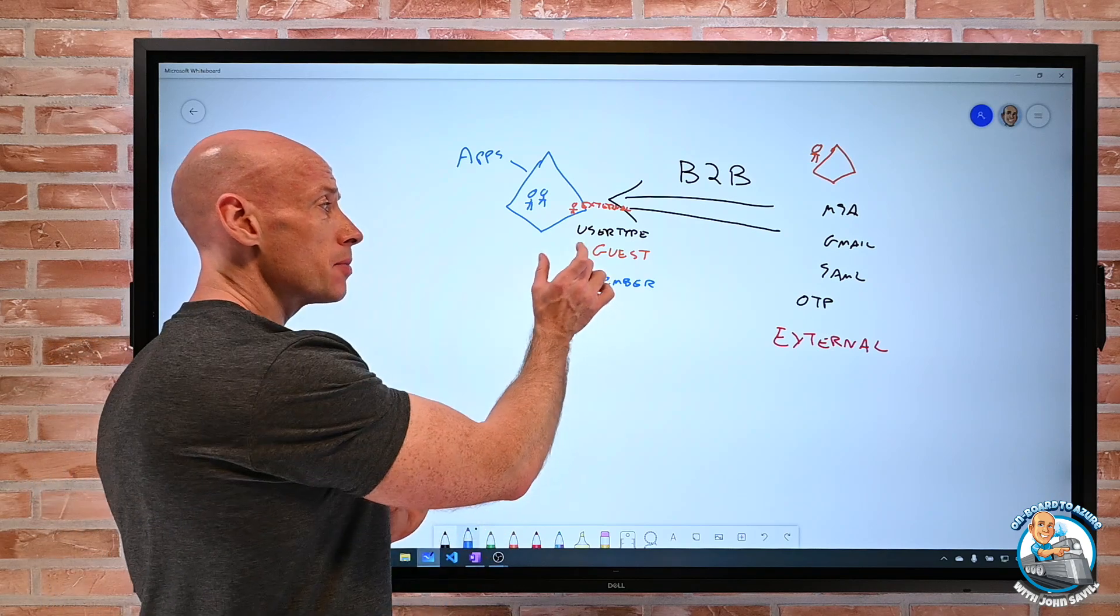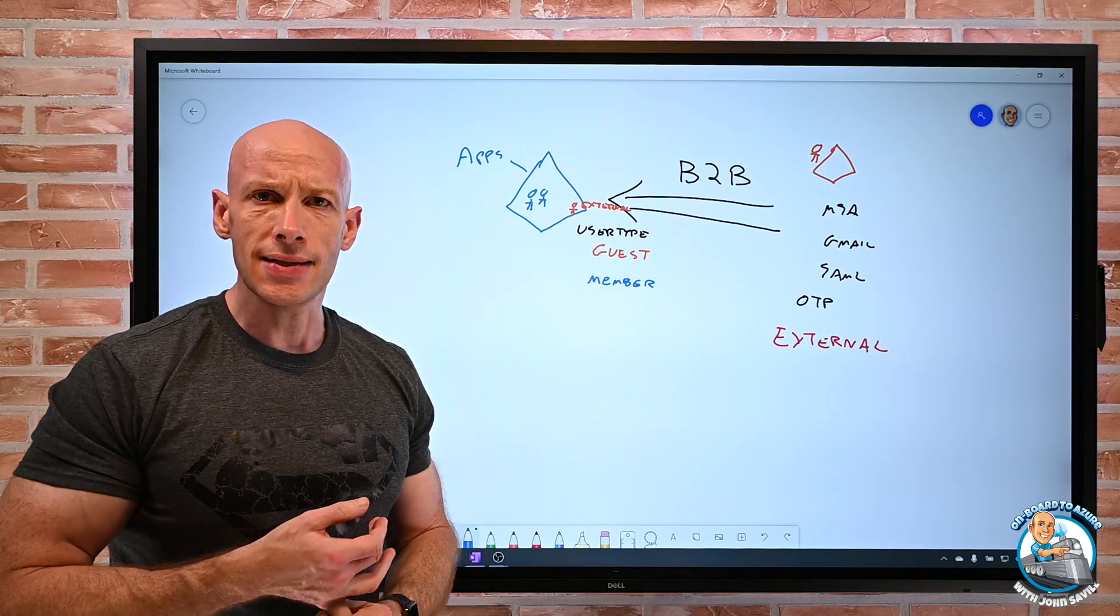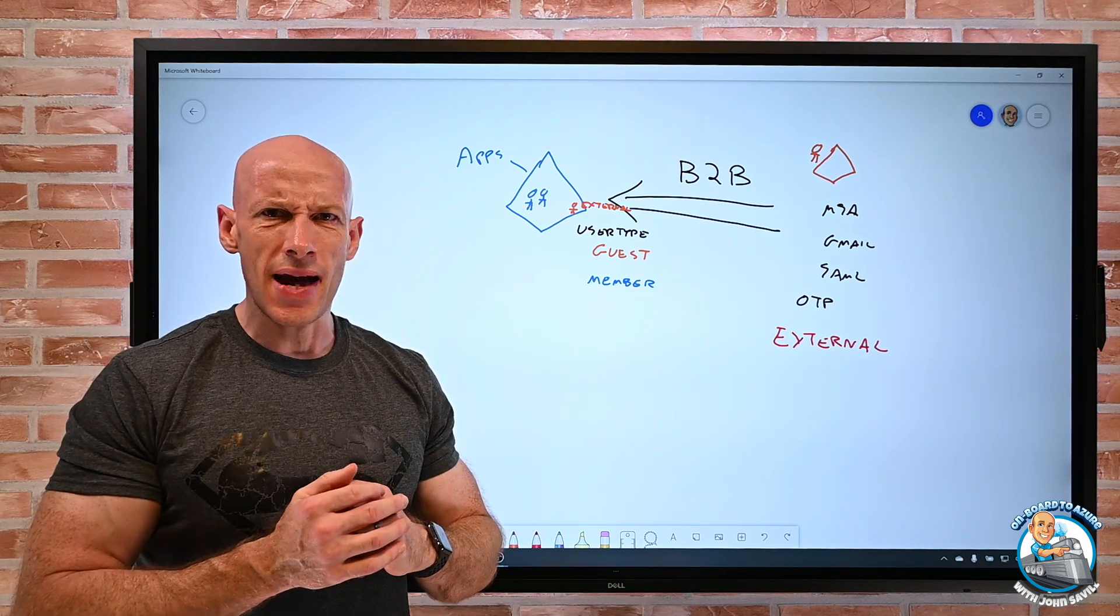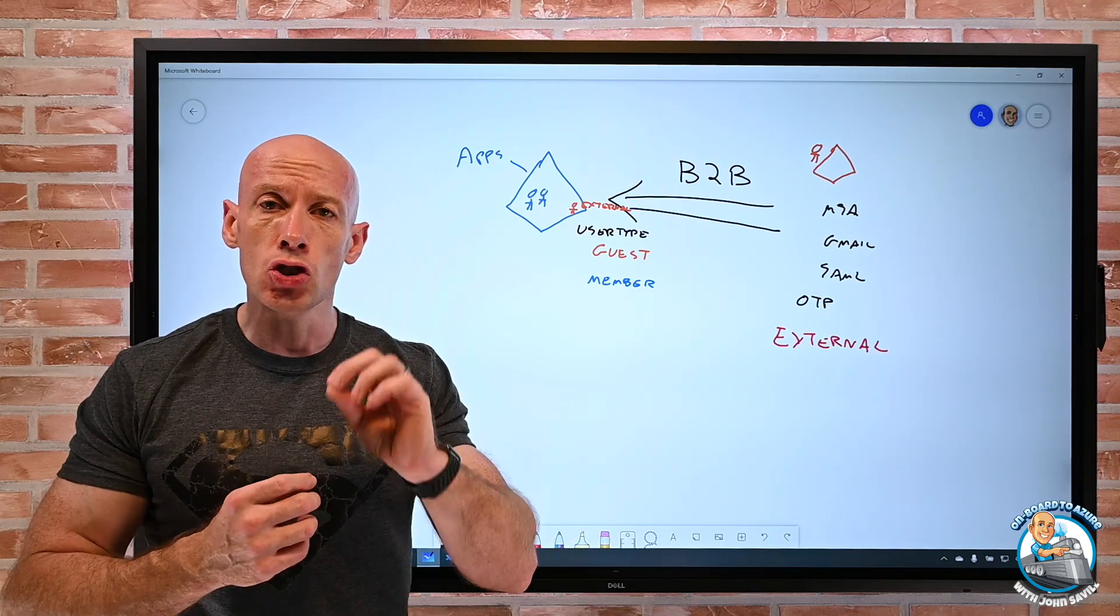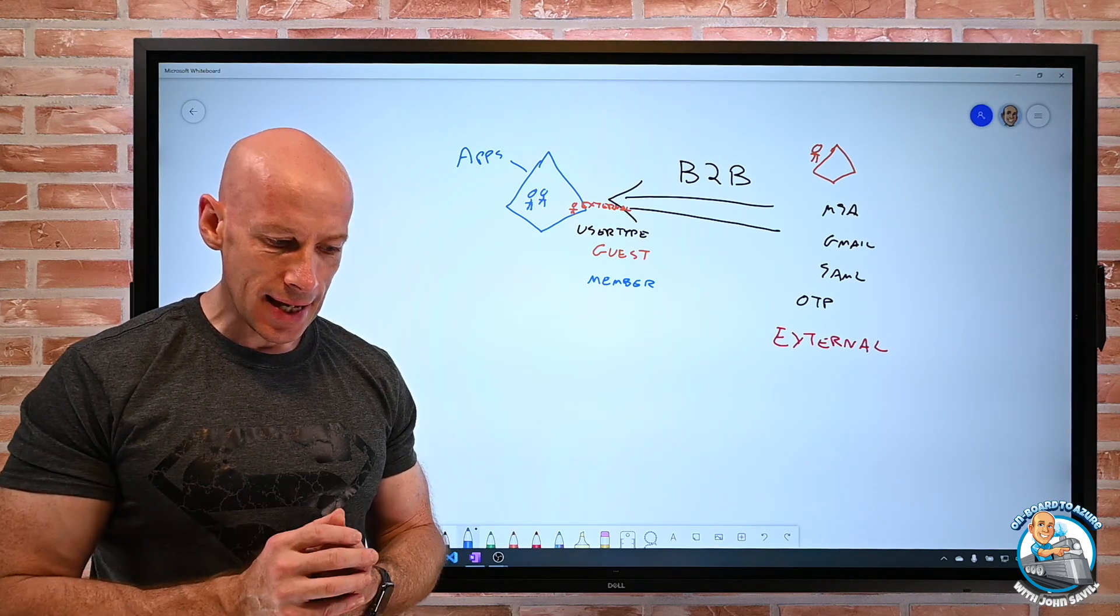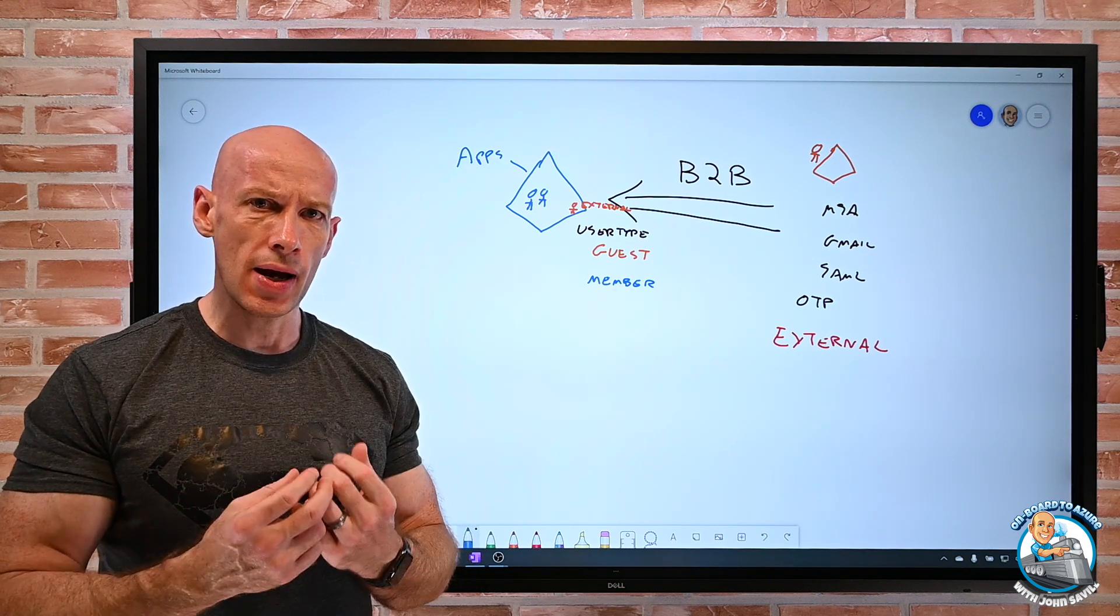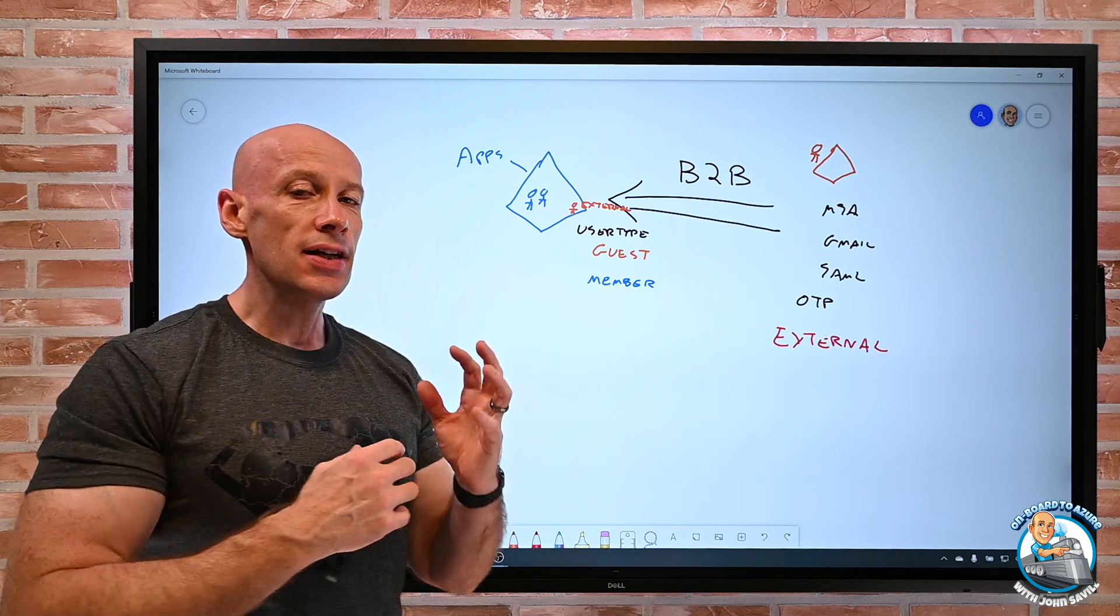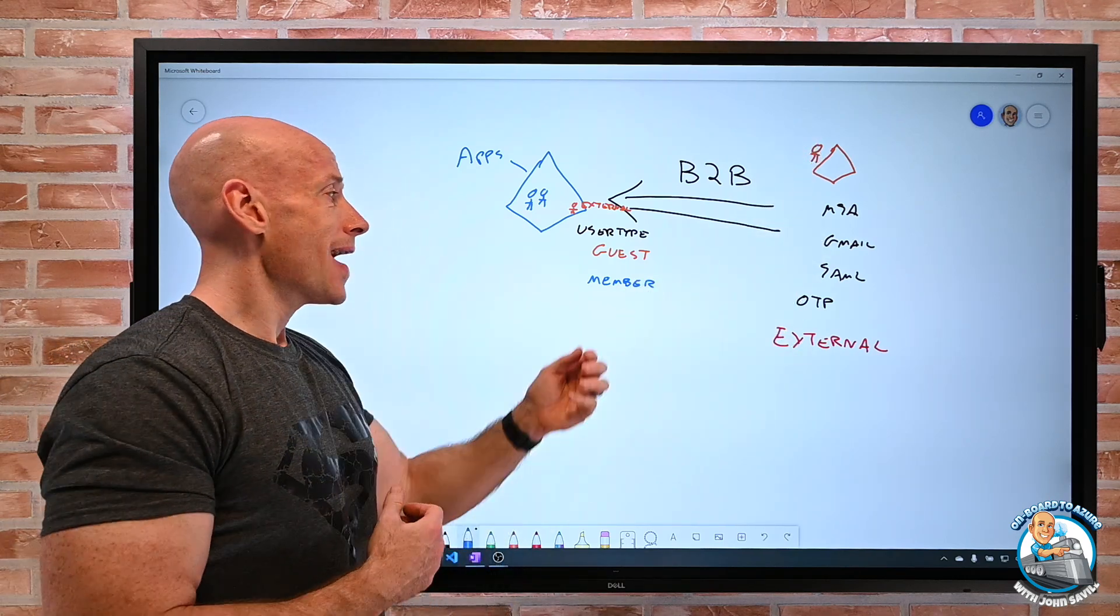But ordinarily you're going to keep them as guests. Now that guest is used in many different things. Conditional access has an option around guests. Access reviews to check should I keep access to this group or app or this role can trigger on guests. Even dynamic groups I have an option for will the user type is guest. So there's many types of checks we can do around guest users. So it's important to understand hey there is this differentiation.